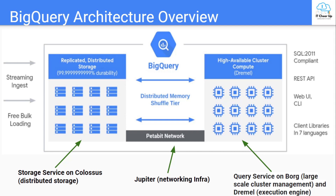Let's take a look at BigQuery's architecture in this section. BigQuery's serverless architecture decouples storage and compute and allows them to scale independently on demand. This structure offers flexibility and cost controls — you don't need to keep expensive compute resources up and running all the time.